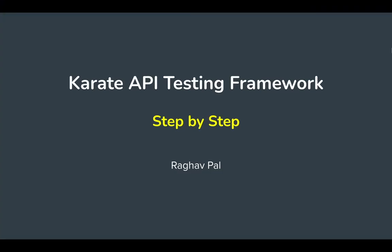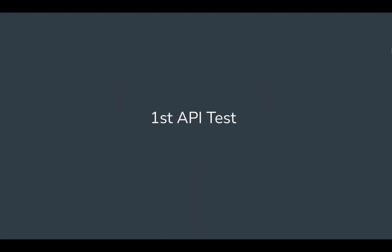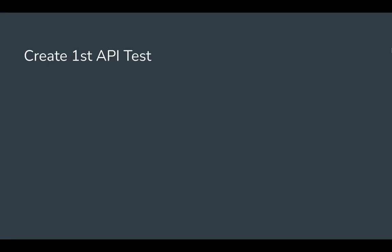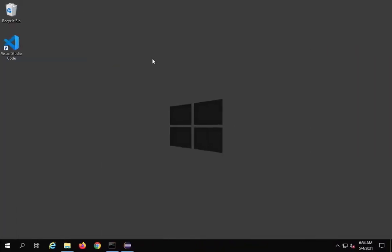Hello and welcome to this session. I am Raghav from Automation Step by Step, and today we are going to see in a very basic step-by-step way how to create our first API test with Karate. This is going to be very easy and very interesting. So let's get started, and step number one is we will first create a feature file under our src/test/java folder.